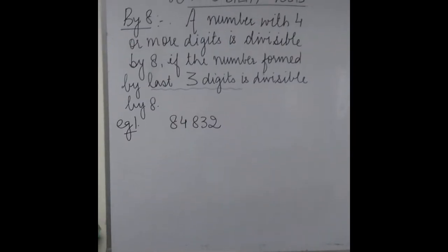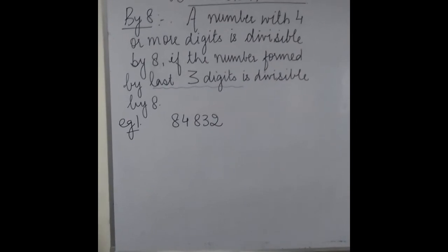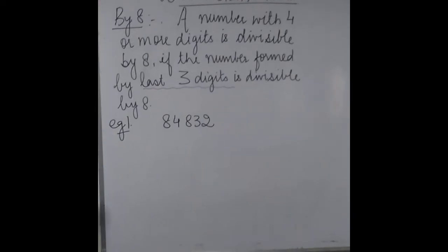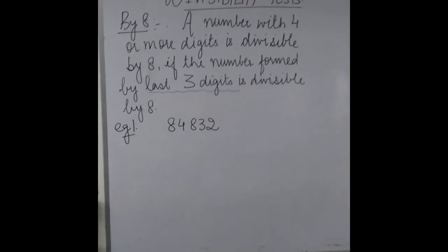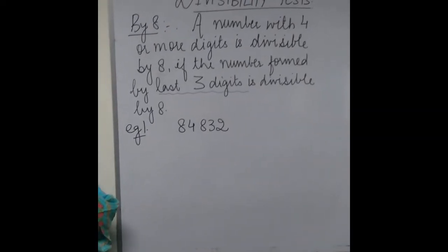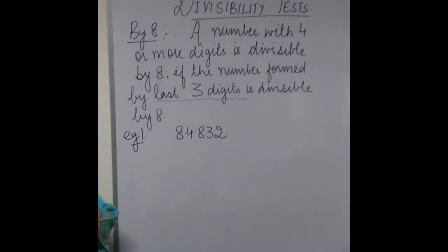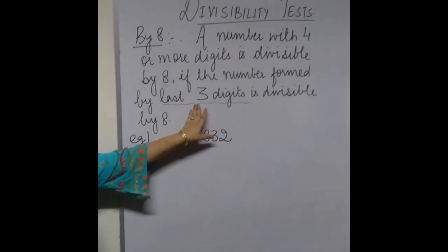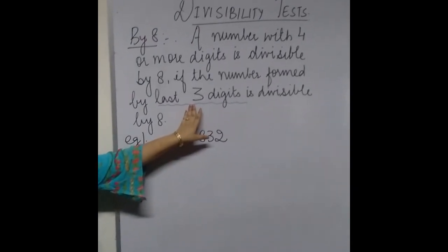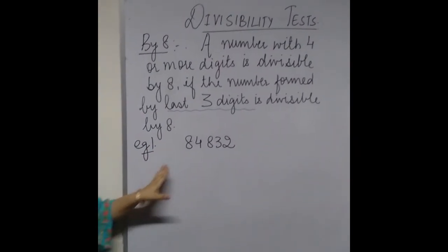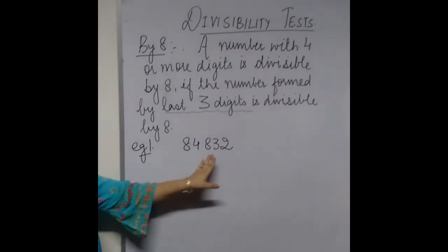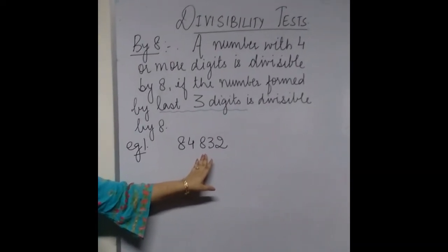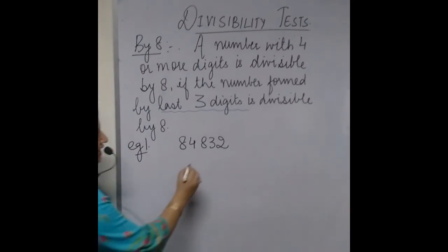Now we come to the divisibility test by 8. A number with 4 or more digits is divisible by 8 if the number formed by the last three digits is divisible by 8. Unlike the divisibility test of 4 where we took the last two digits, for 8 we take the last three digits. For the first example, we have 84832, and the number formed by the last three digits is 832.